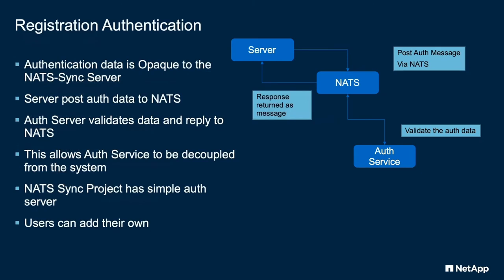The system has a pluggable authentication model. The auth service is user-defined. We have a sample one for testing and demoing that just uses a static user-defined password, and we may expand this in the future. Basically, the server takes the auth data sent by the client, wraps it in a NATS message, puts it out on the NATS cluster. Hopefully somebody is listening for that auth request — our auth server running out there will answer with either a yes or a no, sent back via a NATS message. The server and the auth server are completely decoupled, like you would with any other messaging system with NATS.